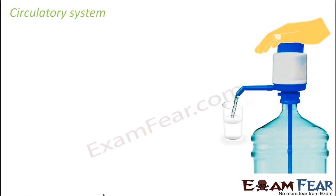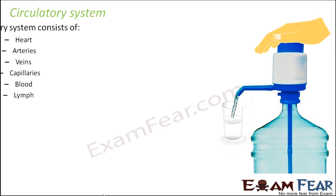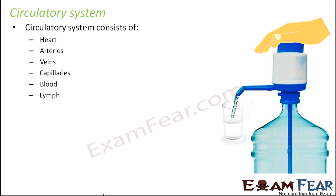First, let us see what the circulatory system is. When we say circulatory system, this system consists of several parts like the heart, arteries, veins, capillaries, blood and lymph. So all these together form the circulatory system.